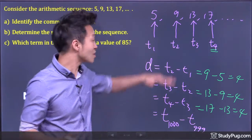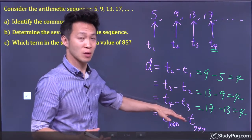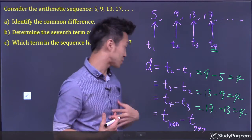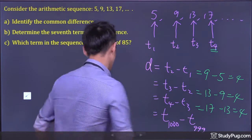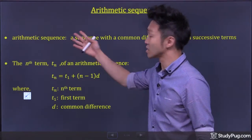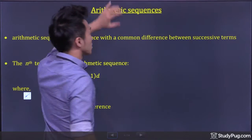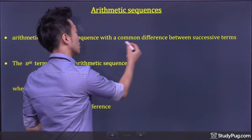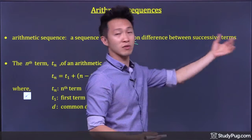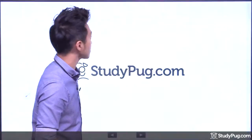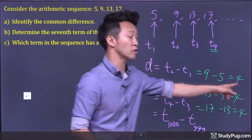So, like I said, it doesn't matter which pair we choose, we'll get the same common difference. And we expected that, because an arithmetic sequence is defined as a sequence with a common difference between successive terms. So in this case, as you can see, the common difference is 4.